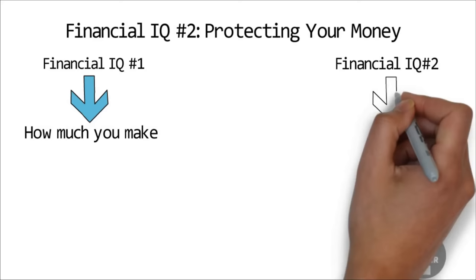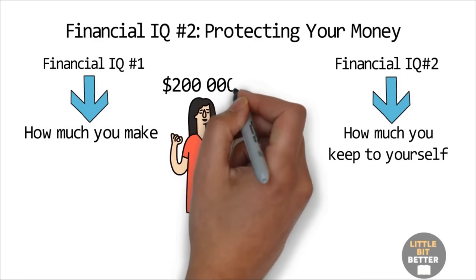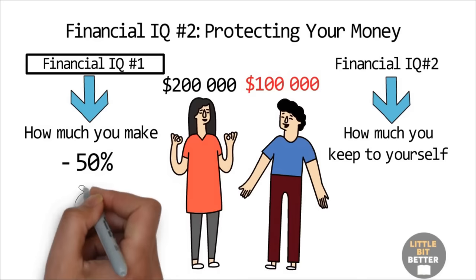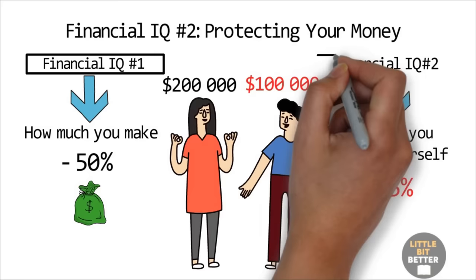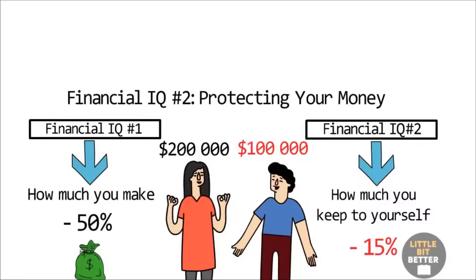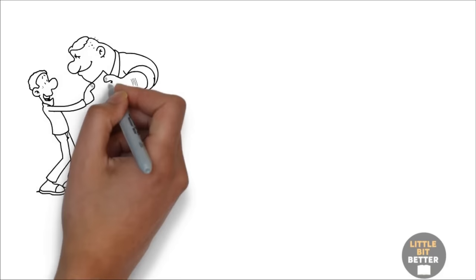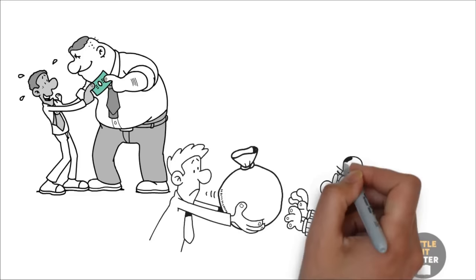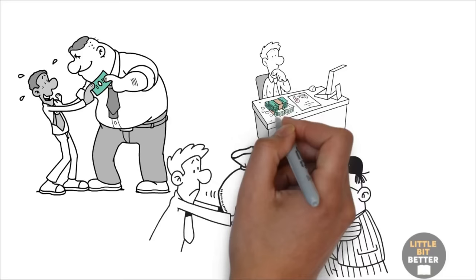For example, a person making $200,000 a year has a higher financial IQ number one than the person who makes $100,000 a year. However, if the first person loses 50% of his income to taxes, but the second person loses only 15%, then it means he has higher financial IQ number two than the first person. Protecting your money from financial predators is important. As most of us know, the world is filled with people and organizations waiting for the opportunity to help themselves to your money. Many of these people and organizations are very smart and powerful. If they are smarter than you or have more power than you, they will get your money. This is why financial IQ number two is so important.